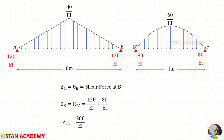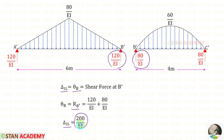Now let us find delta 2L, the slope at point B (theta B), which equals RB dash in the conjugate beam. We need to add the two reactions RB1 dash and RB2 dash. After adding, we get delta 2L equal to 200 upon EI.